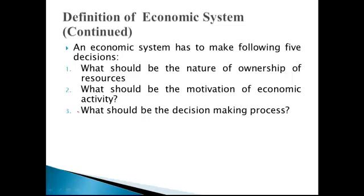Third decision for an economic system is, what should be the decision-making process? Should the economic decisions be made through the market mechanism — यानि demand और supply की forces ये decide करें कि what to produce, how to produce, and for whom to produce — जैसा कि capitalism में होता है? या फिर government ये सारे decisions ले — government decide करे कि economy में क्या produce होना है, कितनी quantity में, कौन-से factors of production use हों, और how to distribute. ये सारे decisions government ले, तो हम इस system को socialism कहते हैं.